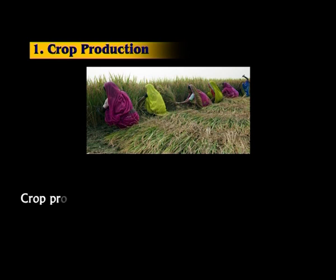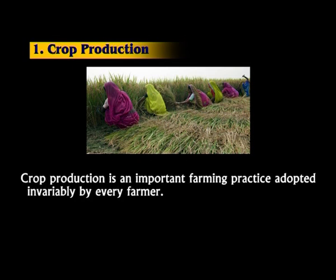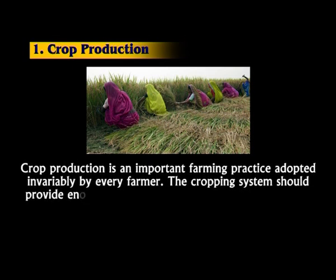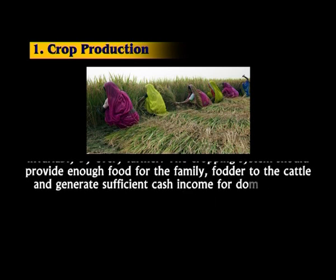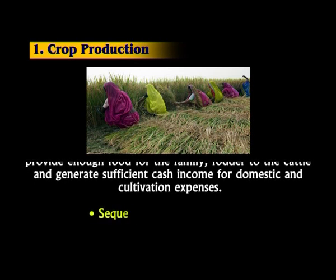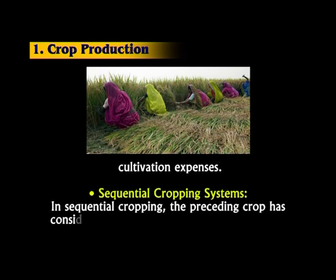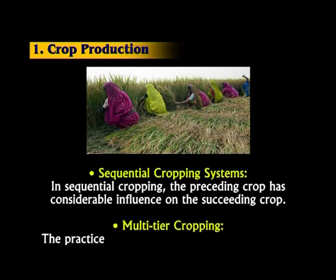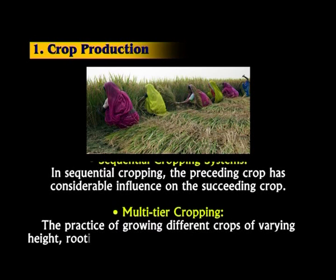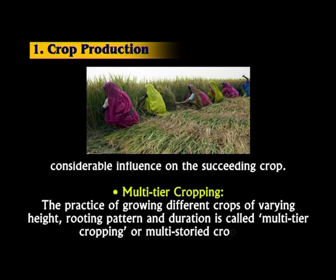Number one is crop production. Crop production is an important farming practice adopted invariably by every farmer. The cropping system should provide enough food for the family, fodder for the cattle, and generate sufficient cash income for domestic and cultivation expenses. Sequential cropping: in sequential cropping, the preceding crop has considerable influence on the succeeding crops. Multi-tier cropping: the practice of growing different crops of varying height, rooting pattern, and duration is called multi-tier or multi-storey cropping.